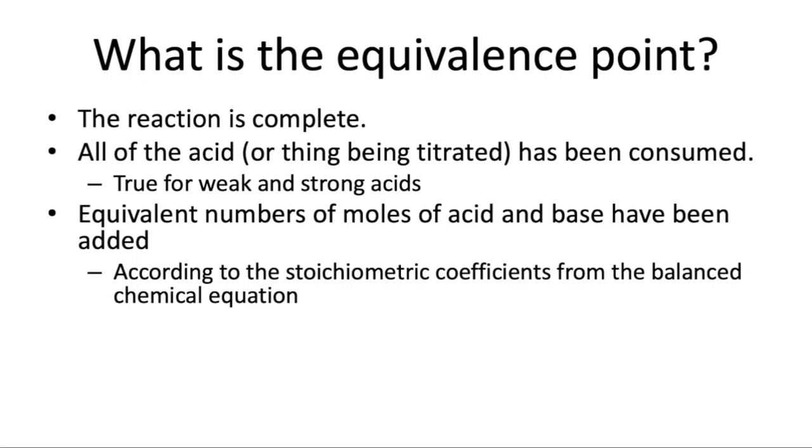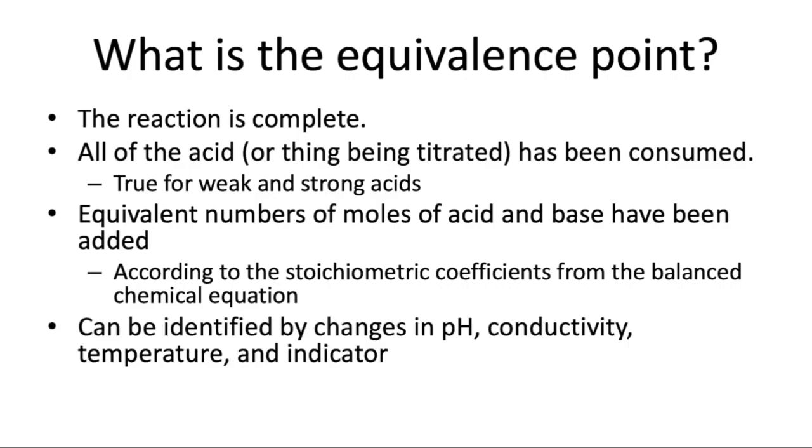We also say this is when we've had equivalent moles of acid and base according to the stoichiometry of the reaction. And there's a variety of ways that we can identify the end point. A common way is by using an indicator, which is what you will do in lab. But we're also going to ask you questions about pH, conductivity, and temperature, even though you're not observing those directly in the lab, to make predictions about what you would see.